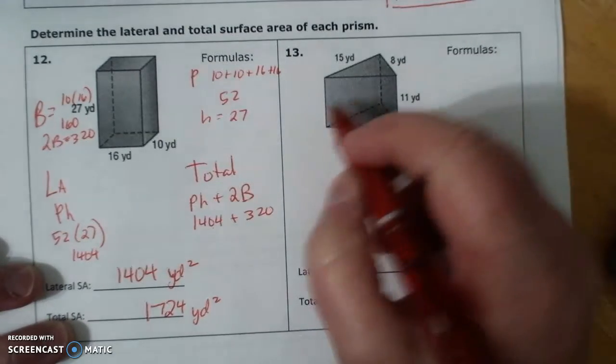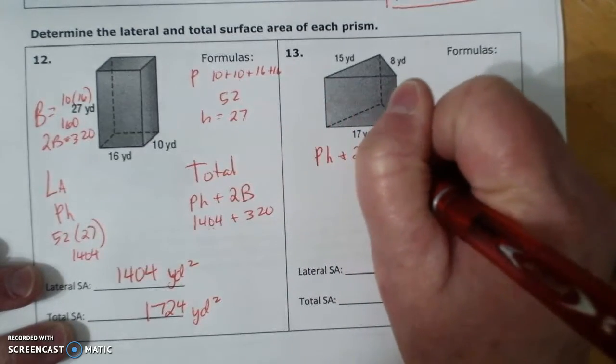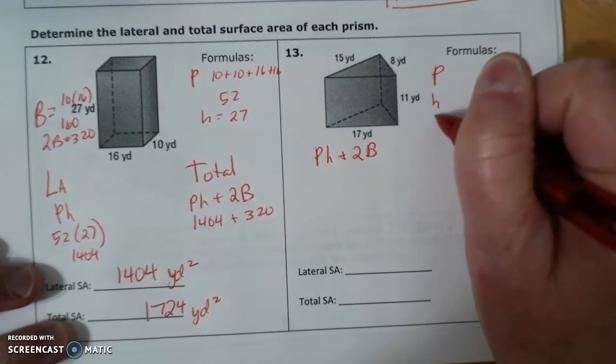Lateral and total of a prism. Ph plus 2b. I need a p, I need an h, I need a b, and I need a 2b.